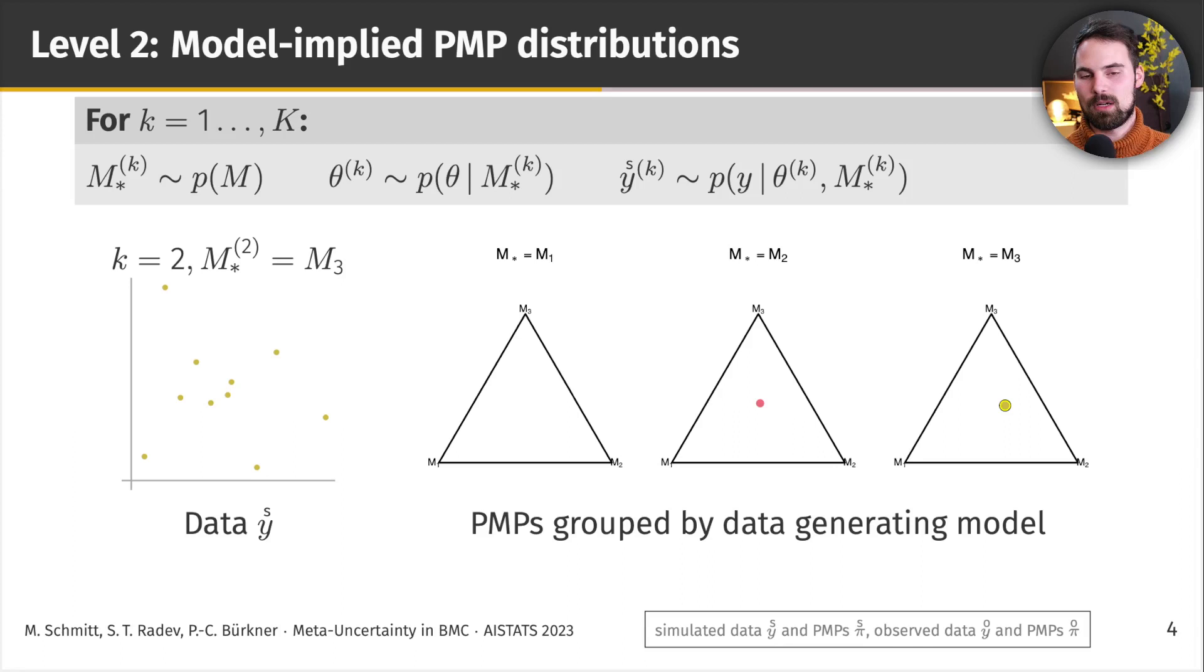For the second simulated data set, we draw model index M3. So, we also sample parameters from the prior of model 3 and plug it into the likelihood of model 3. Again, we compute posterior model probabilities, and we see, again, that they are roughly balanced. We repeat this 10 times, and we see that we get a different pattern for data that's generated from each of the candidate models.